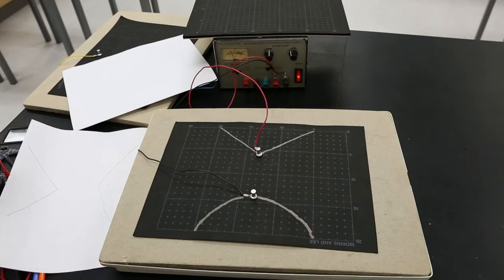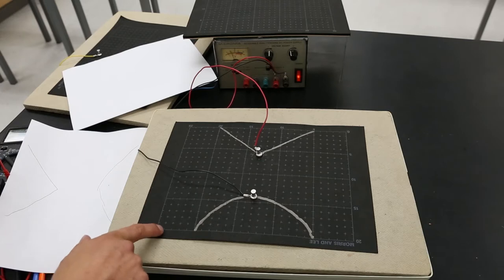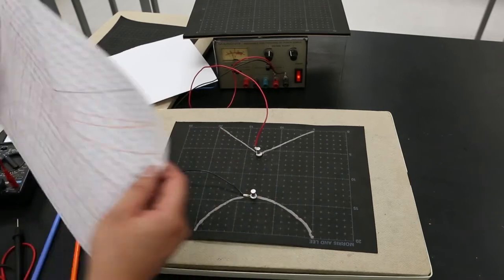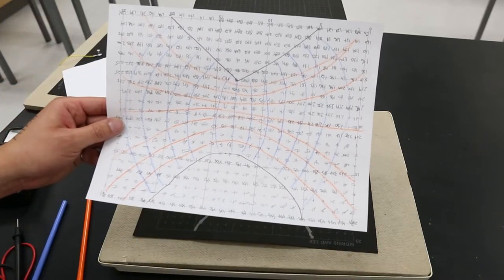Now when you conduct the experiment, what you're going to be doing is measuring the voltages at each and every individual point, all with reference to your ground plane. And once you're done, you'll probably have a picture that looks something similar to this.